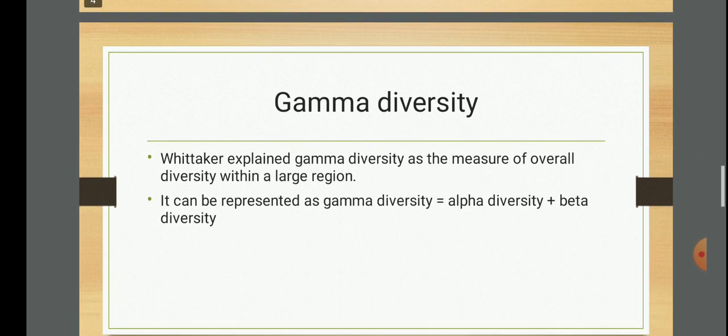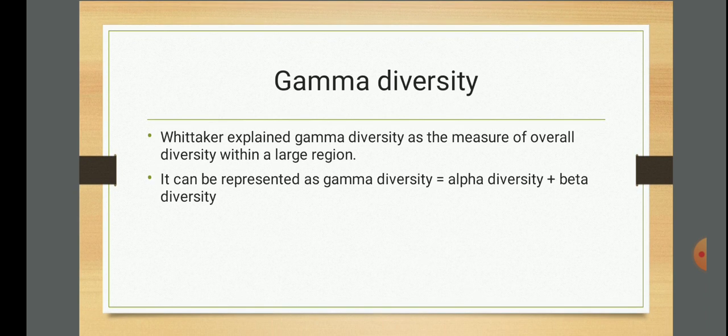And finally, gamma diversity - it's really simple. Alpha, beta, gamma: there are 3 types of diversity. From what Whittaker explained, gamma diversity is the measure of overall diversity within a large region. So alpha is diversity in an area, beta is a comparison, and gamma is the overall measure of the entire region. It can be represented as: gamma diversity equals alpha diversity plus beta diversity. Together they form the gamma diversity.